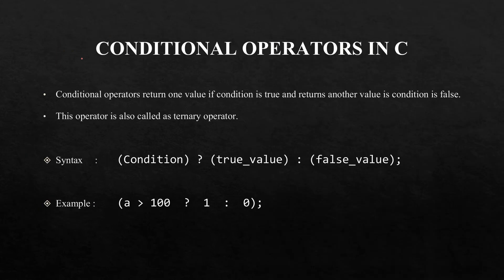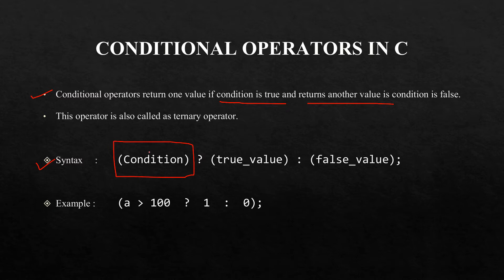In this slide we will discuss the conditional operator. The first point is that the conditional operator returns one value if the condition is true and returns another value if the condition is false. The syntax is: first we give a condition, such as a greater than 10.